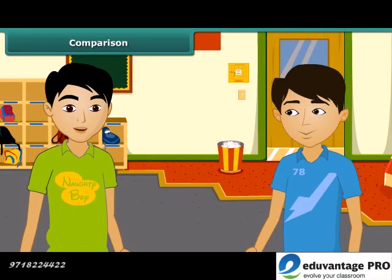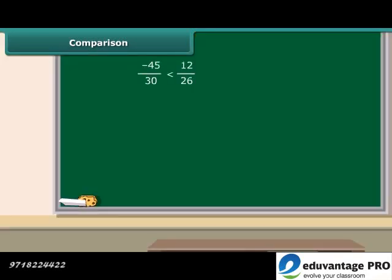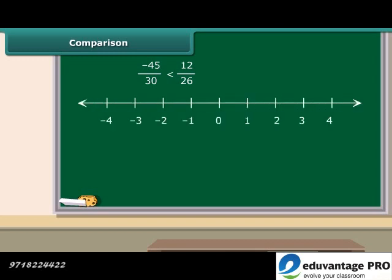If we have two rational numbers, can you compare them? I will tell you how. We know that a negative number is always smaller than a positive number. We can also compare rational numbers using a number line — the further right a number is, the greater it is. For example, 2 by 3 lies to the right of 1 by 3, so 2 by 3 is greater than 1 by 3. Similarly, minus 1 by 3 is greater than minus 2 by 3, because minus 1 by 3 lies to the right of minus 2 by 3.